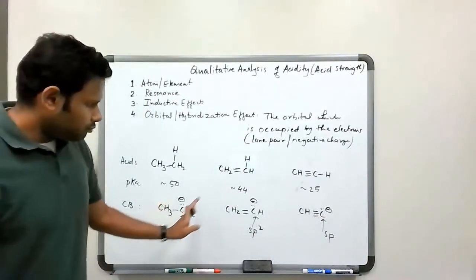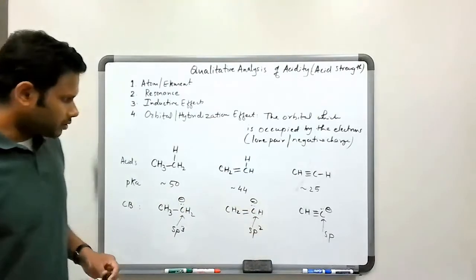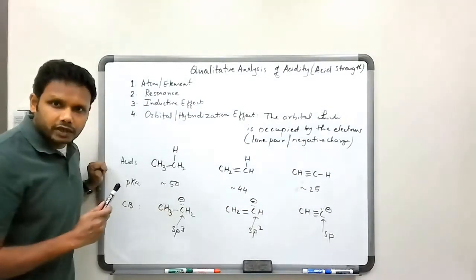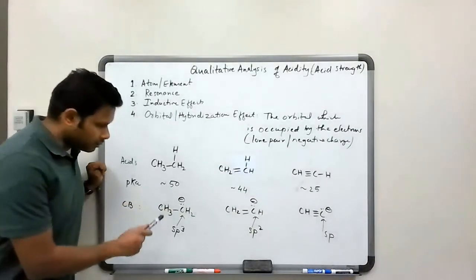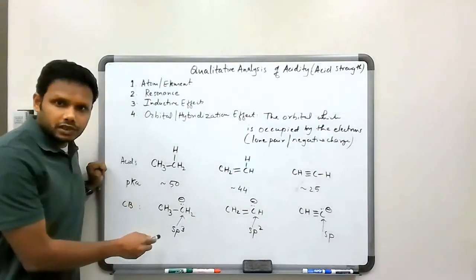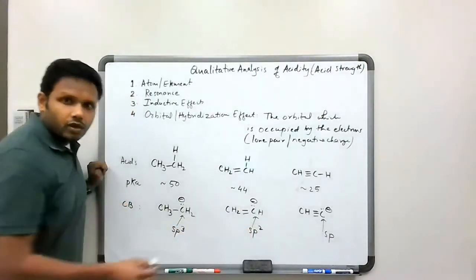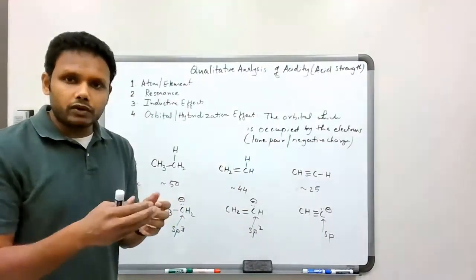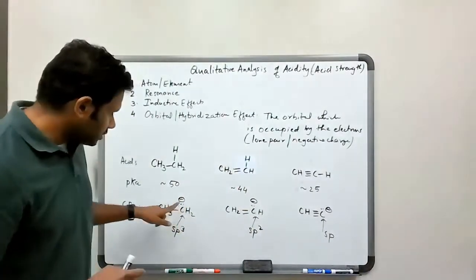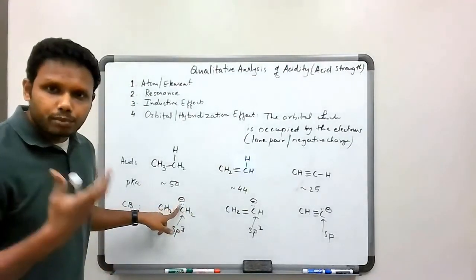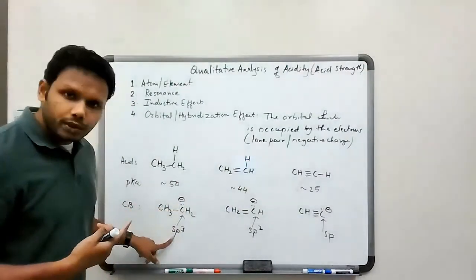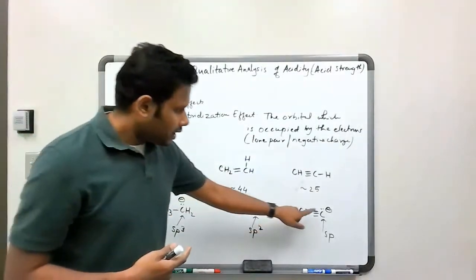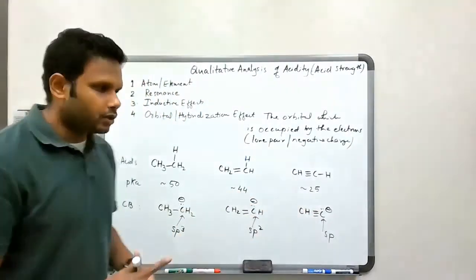That means as we move across these carbons, the hybridization changes. And since we are counting this lone pair of electrons in determining or for determining the hybridization of these atoms, what that means is that lone pair is present in one of those hybridized orbitals. That means this lone pair is present or it occupies an sp3 hybrid orbital. This lone pair occupies an sp2 hybrid orbital, and that lone pair occupies an sp hybrid orbital.